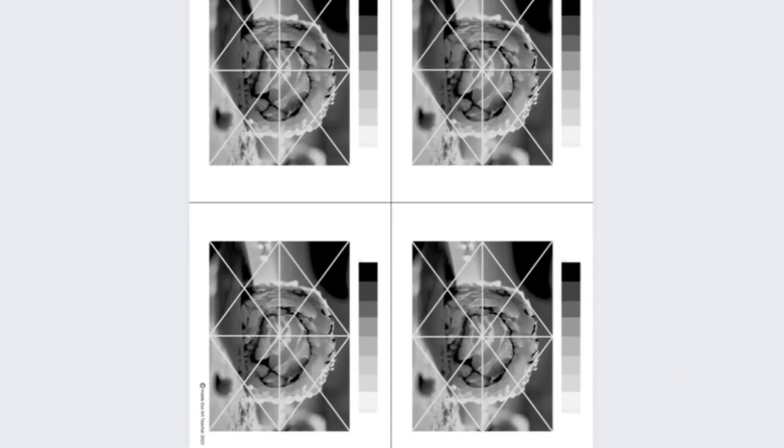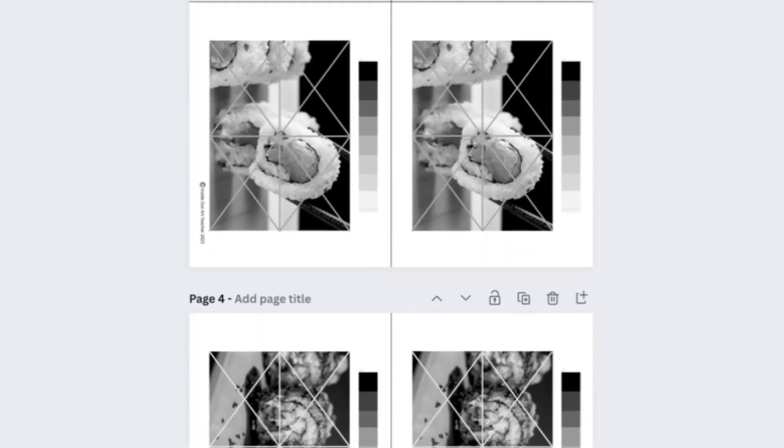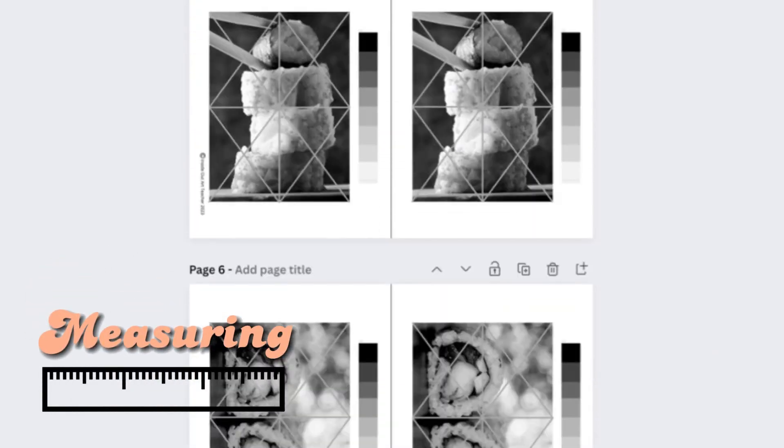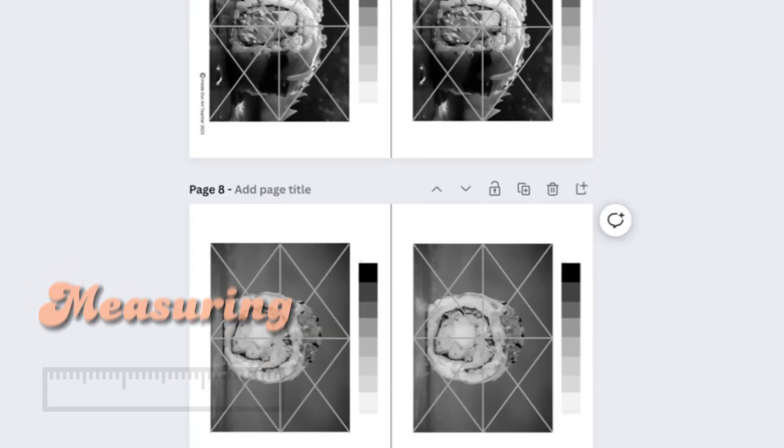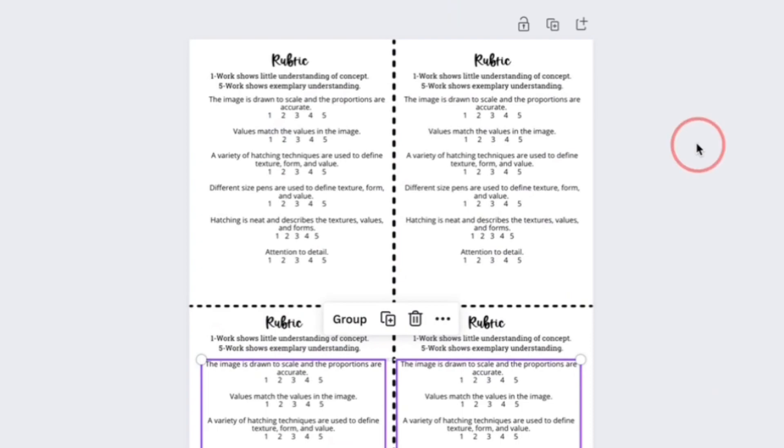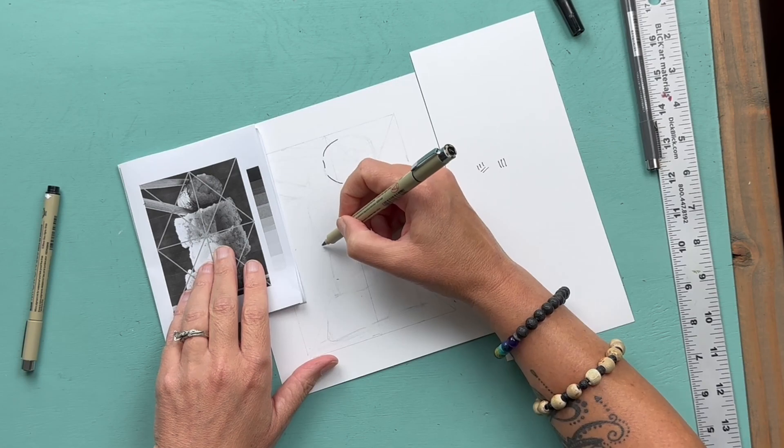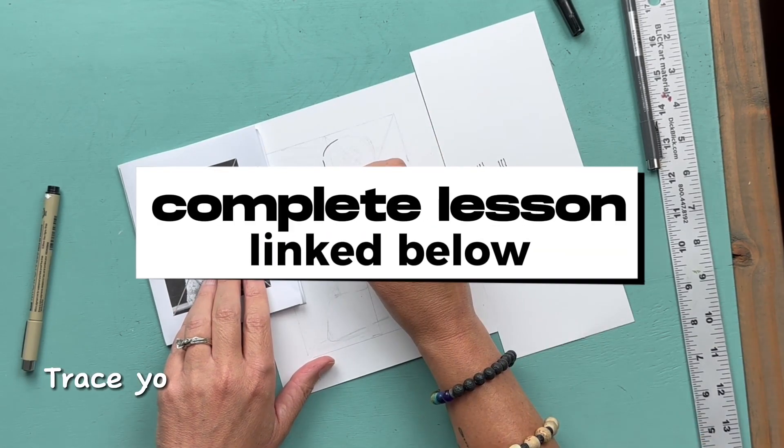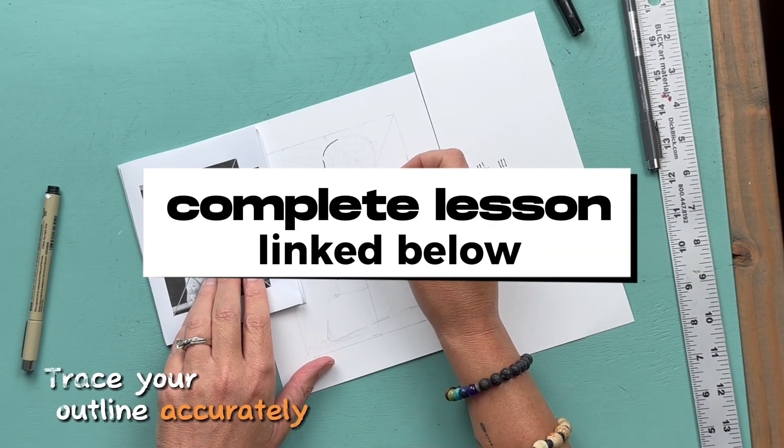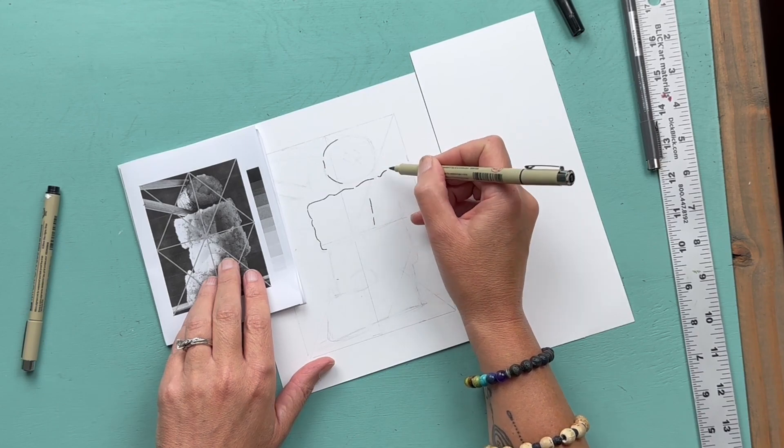They come gridded and non-gridded so that students don't have to worry about measuring. All of that prep work is already done for them. I have a rubric so that they can gauge their progress throughout the project and see how they're being graded. All of those things you can find in my TeacherPayTeacher shop, inside.artteacher, or on my website, inside.artteacher.com.